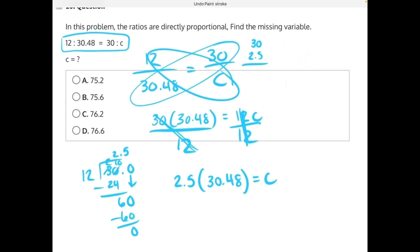Or you could keep everything together, 30.48 times 2.5, and do the multiplication all at once.